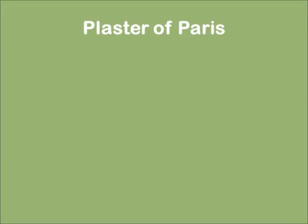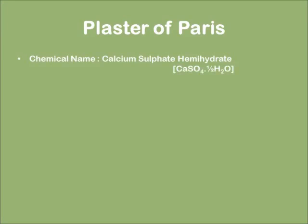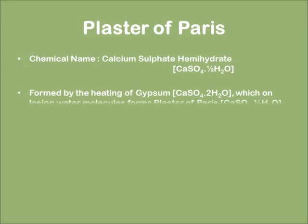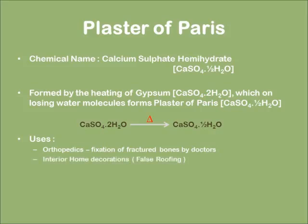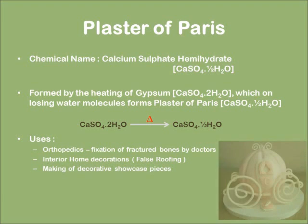Coming to plaster of Paris. The chemical name of plaster of Paris is calcium sulphate hemihydrate. Plaster of Paris is formed by heating gypsum, which on losing water molecules forms plaster of Paris. The equation is: CaSO4·2H2O on heating loses water molecules to give CaSO4·½H2O. The uses of plaster of Paris are in orthopaedics where a doctor treats fractured bones, and in interior home decoration such as false roofing and making decorative pieces.